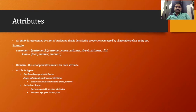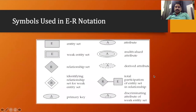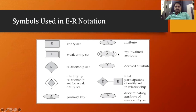So to summarize, we have a simple or single-valued attribute, a composite attribute, and a multi-valued attribute. Looking at this diagram, you can differentiate: simple attributes have a single oval shape, while multi-valued attributes like phone number, hobbies, and degree are placed in a double oval shape. Composite attributes are a combination of two or more attributes, and their representation we'll see shortly.